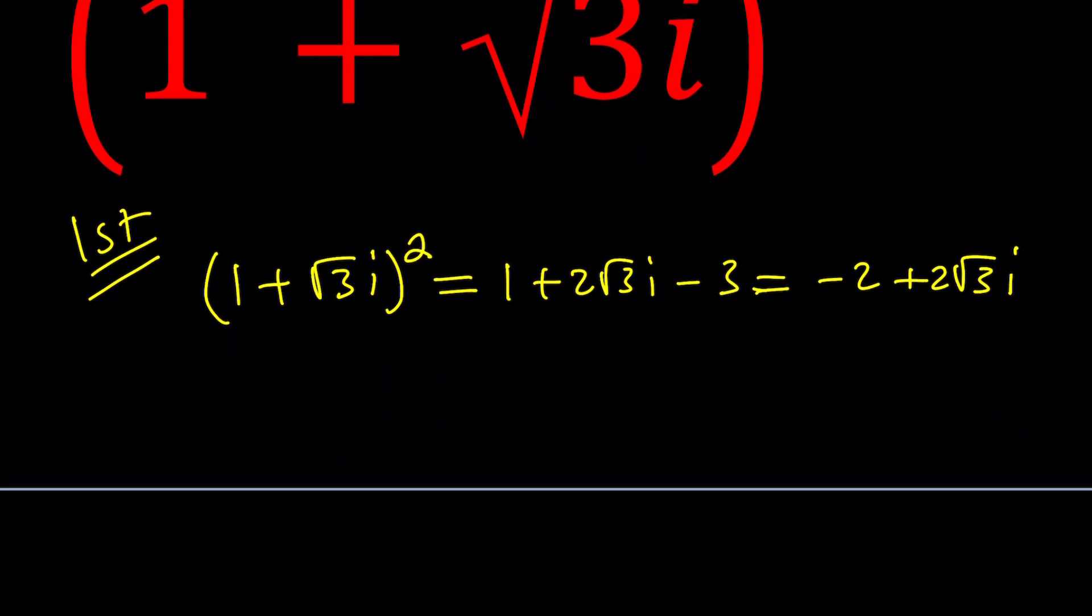I get 1 plus 2 root 3i minus 3 which can be written as negative 2 plus 2 root 3i. Awesome. That should kind of give me an idea because if I take out a negative 2 I will be getting 1 minus root 3i. So when I square the z, I got the conjugate of z multiplied by negative 2. So in other words, I can write this as an equation. z squared is the same as negative 2 times z bar. z bar being the complex conjugate. 1 plus root 3i and 1 minus root 3i are complex conjugates.